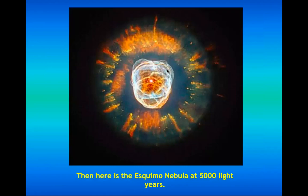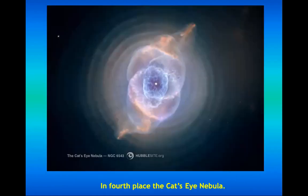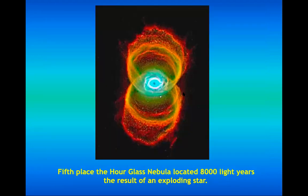Here is the Schemo Nebula at 5,000 light years away. Next is the Cat's Eye Nebula, which shapes like a cat's eye — very beautiful. The colors tell us about the elements and substances present at that point in outer space. In fifth place, the Hourglass Nebula located 8,000 light years away, as a result of an exploding star — it looks like an eyeglass.